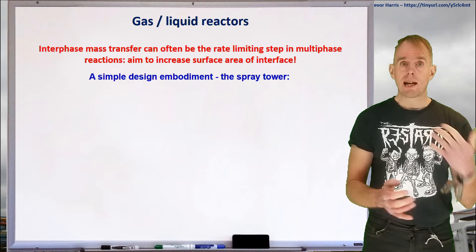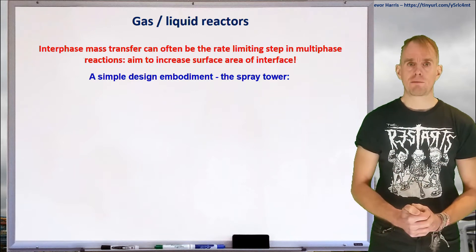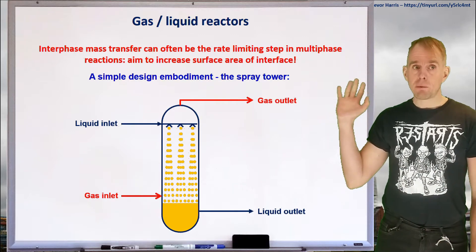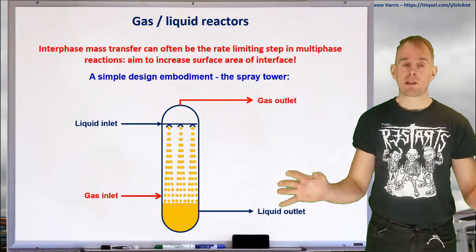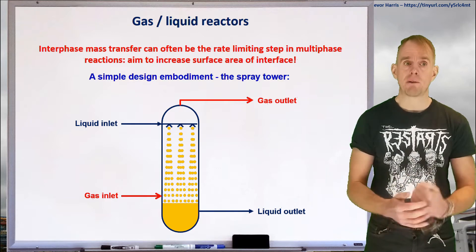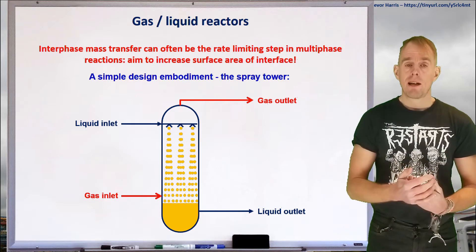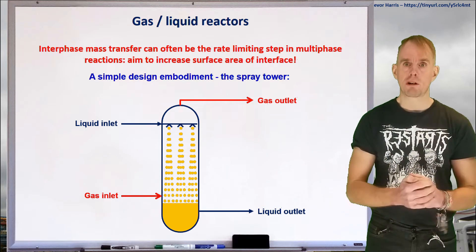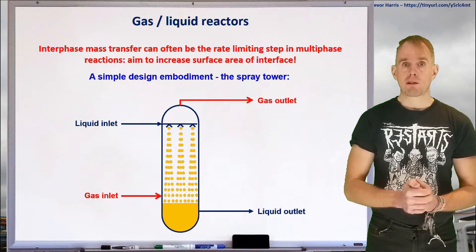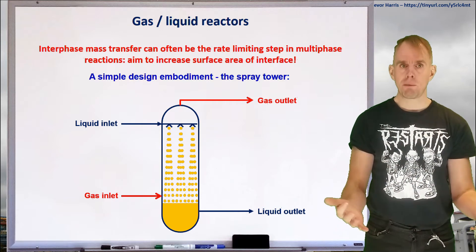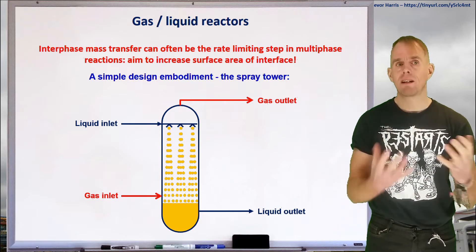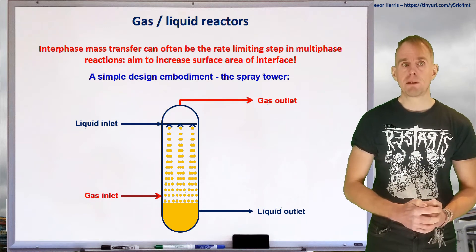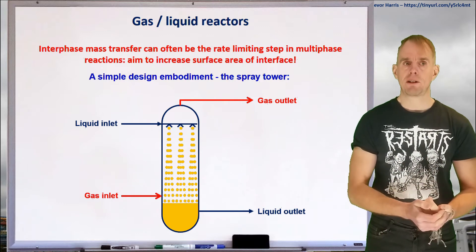So if we've got a gas-liquid system, how can we do this? Here on the whiteboard is one idea. If you have liquid being sprayed into a tower at the top, and gas coming into a tower at the bottom rising upwards, then so long as that spray process ensures you've got nice small liquid droplets, for a given volumetric flow rate you might have millions of liquid droplets, hence a very large surface area of gas-liquid interface. And so spray towers can sometimes be used when your gas flow dominates your liquid flow.